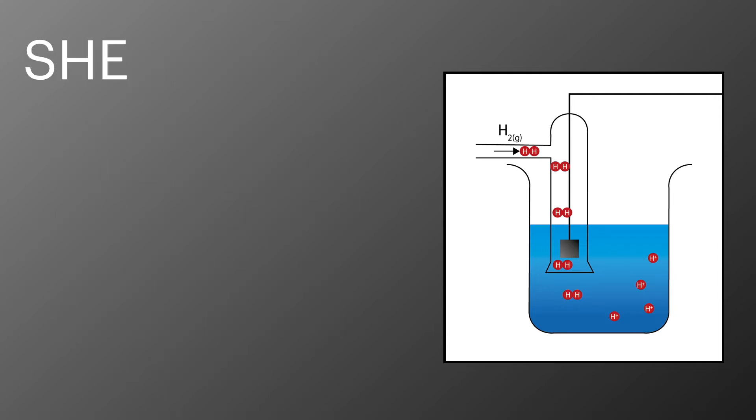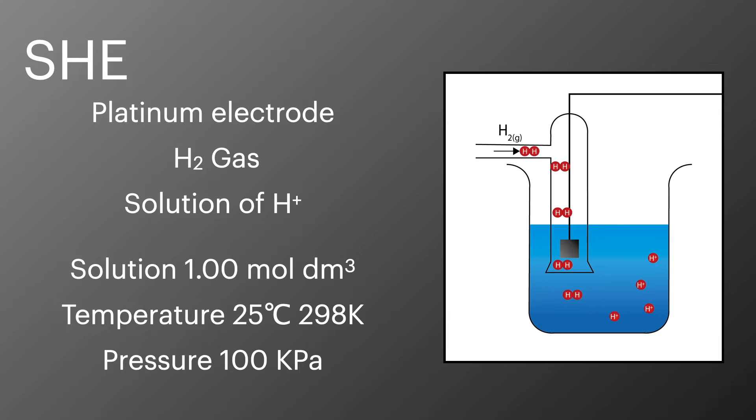So a standard hydrogen electrode is a platinum electrode with hydrogen gas being bubbled over the top into a solution of H plus ions. The solution needs to be one mole per decimetre cubed of H plus ions. It needs to be held at a temperature of 25 degrees Celsius or 298 Kelvin and the pressure of 100 kilopascals.